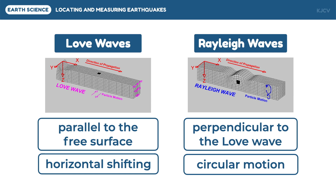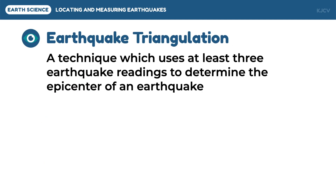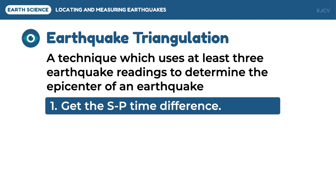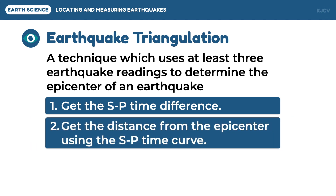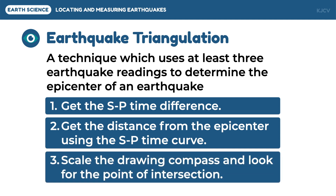The surface and body waves are used to locate and measure earthquakes. Let us first discuss the process of locating the earthquake epicenter through earthquake triangulation. This is a technique which uses at least three seismographs to give information on the epicentral distances. There are three general steps: getting the S-P time difference in each location, getting the epicentral distance from the S-P time difference, and drawing the radius of the epicentral distance to identify the intersection or the actual epicenter.